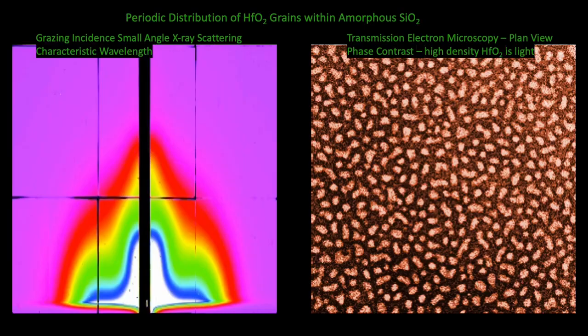Limestone accumulates on the sea floor at a rate of about a foot every 10,000 years, so my cycladic heads were about 80,000 years in the making. This is a grazing incidence small-angle x-ray scattering measurement showing a characteristic wavelength — a periodicity to the distribution of these isolated grains. I know of no other material in the literature that has this periodic columnar behavior.